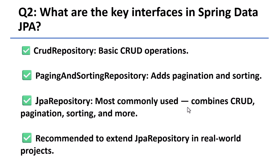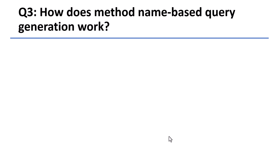Behind the scenes, it still uses JPA providers like Hibernate. Question 2: What are the key interfaces in Spring Data JPA? The three main interfaces are CrudRepository, PagingAndSortingRepository, and JpaRepository. Among them, JpaRepository is the most commonly used because it includes everything — basic CRUD, pagination, sorting, and even support for custom queries.